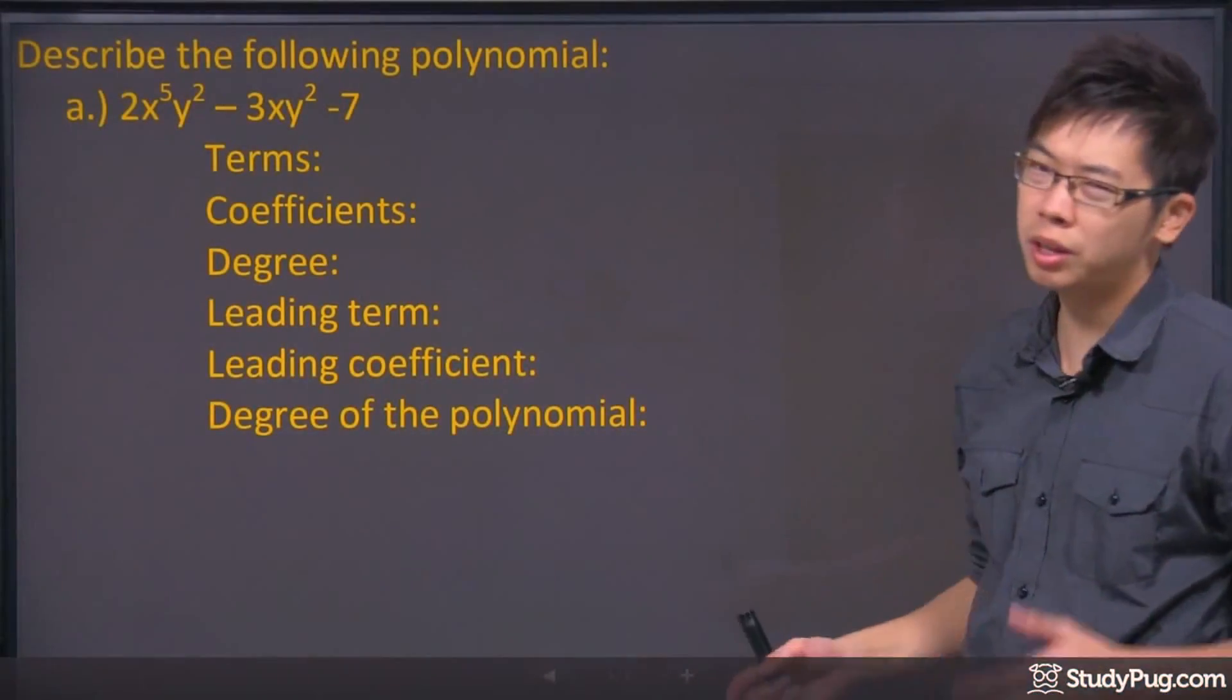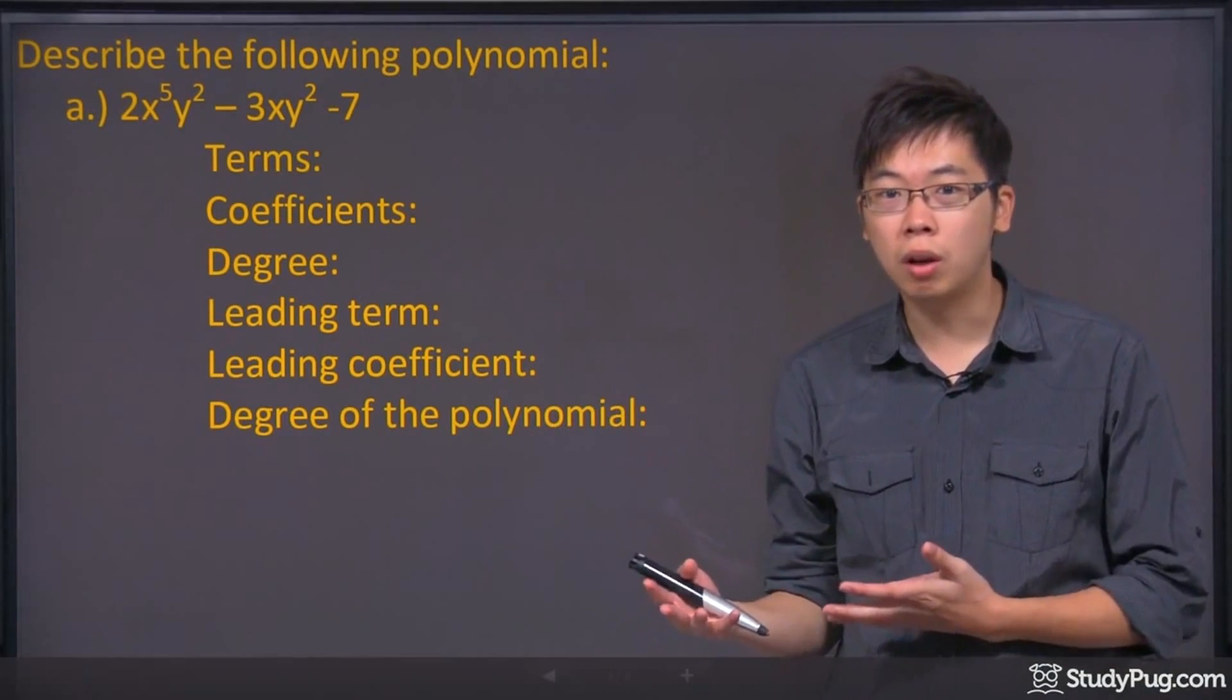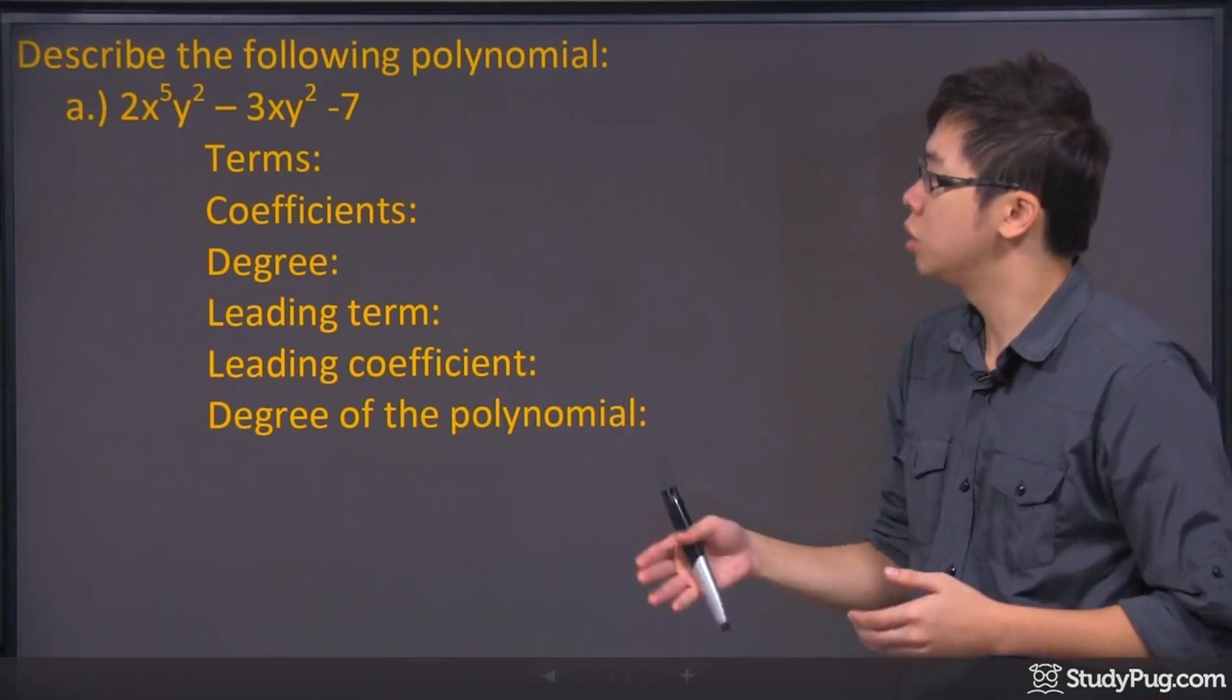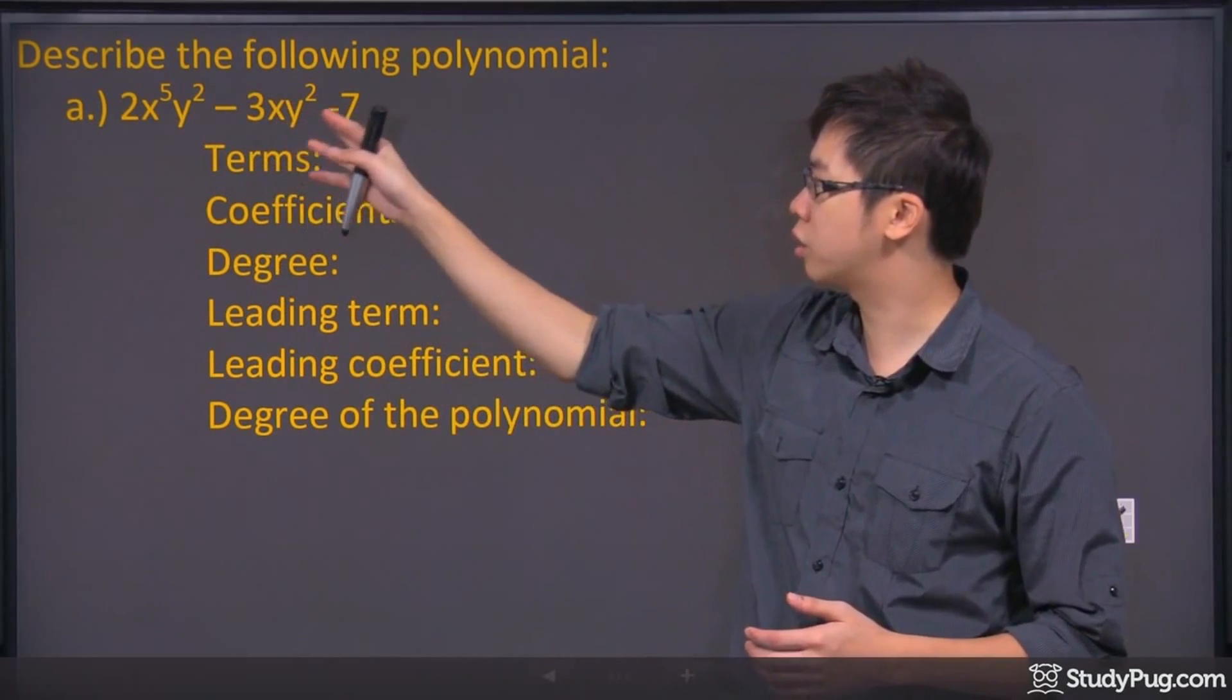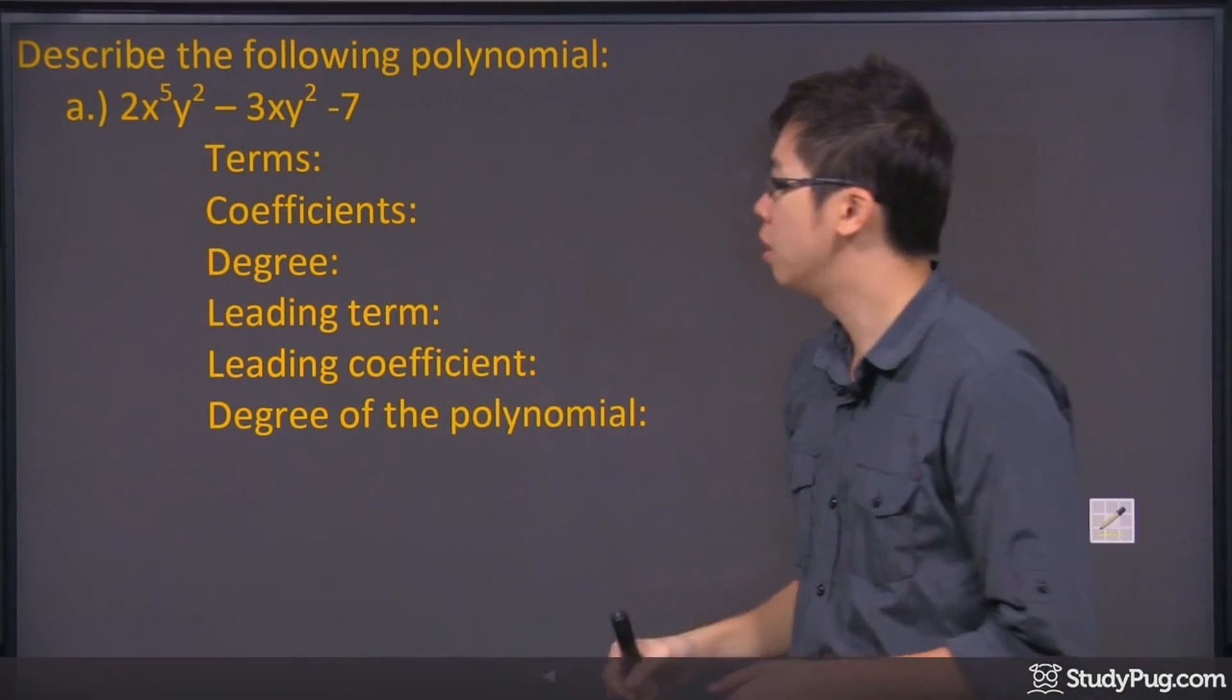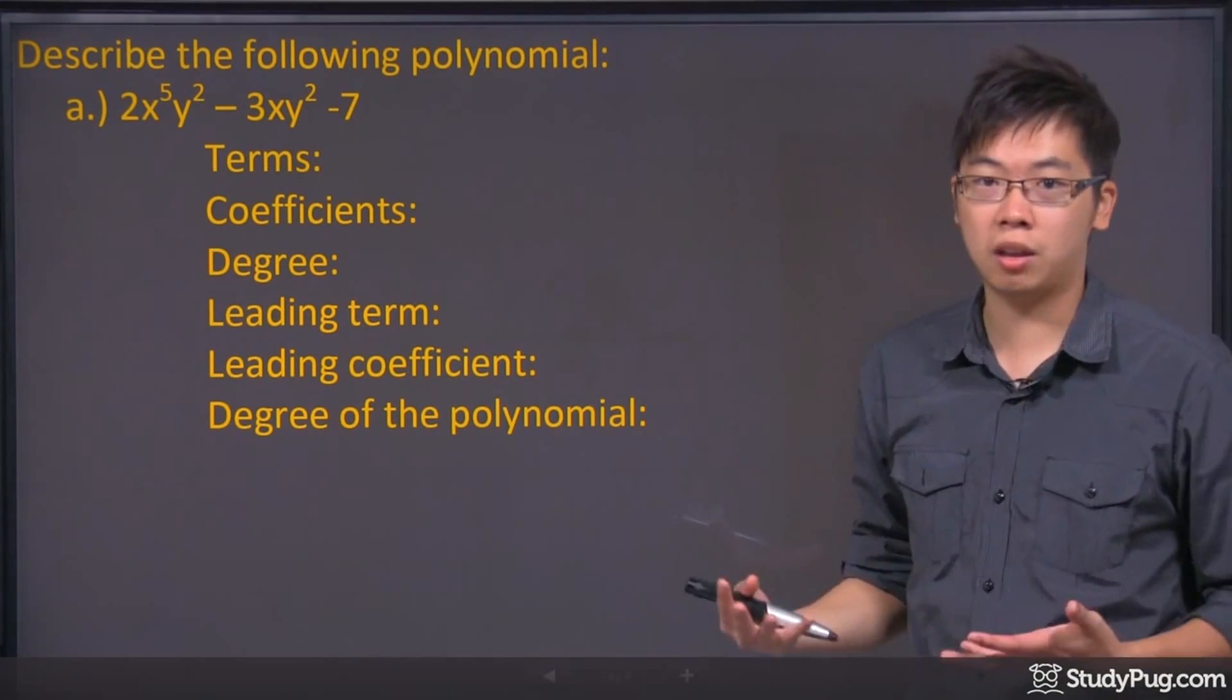Hi, welcome to this question right here. So in this chapter, we got a couple different things that we'll be asking you about the polynomial that you're looking at. So today we have 2x to the power of 5, y to the power of 2, minus 3xy squared minus 7. So here are the things that you might encounter that you have to answer the question.